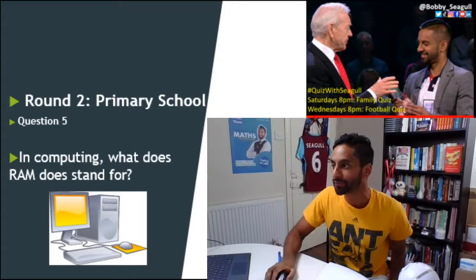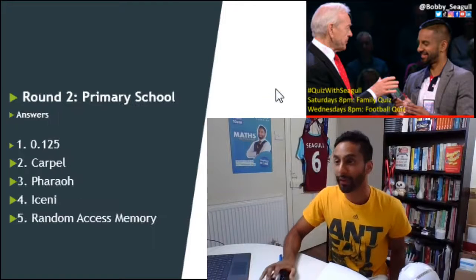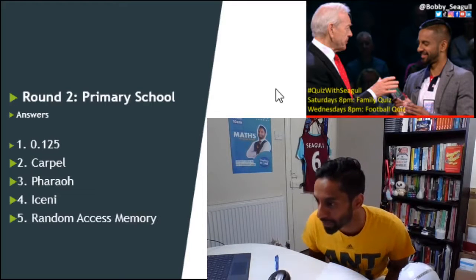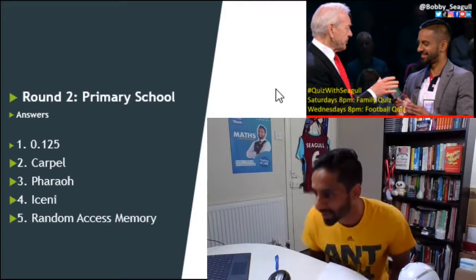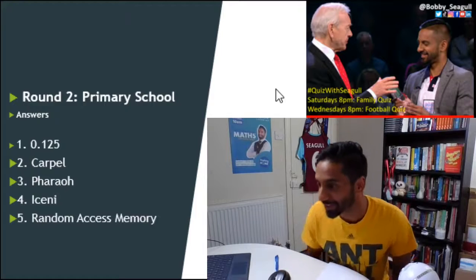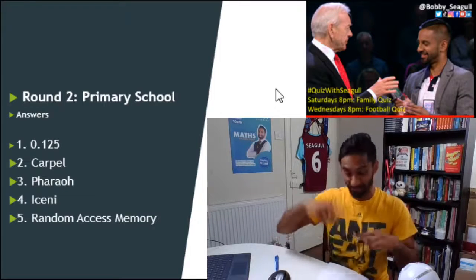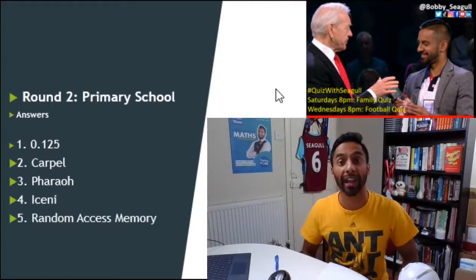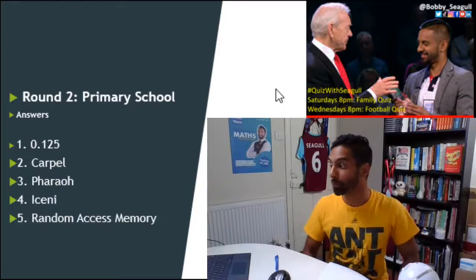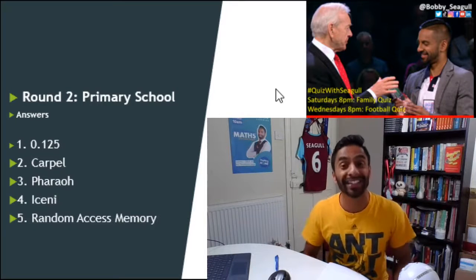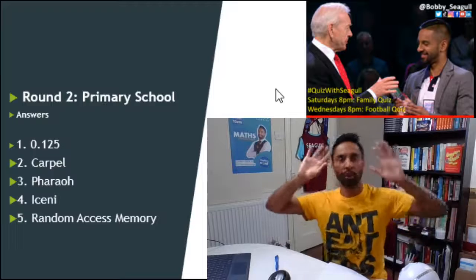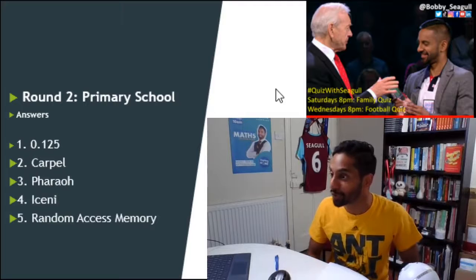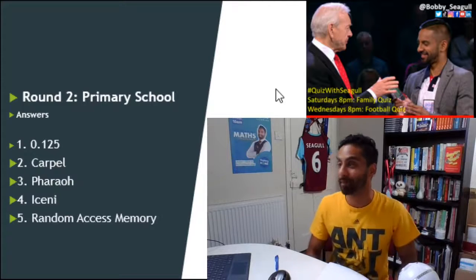Let's see the answers. Number 1 was 0.125. Number 2 is Carpel — that's the female part of the flower. Number 3: Pharaoh — P-H-A-R-A-O-H. Number 4: Boudicca led the Iceni tribe. Number 5: Random Access Memory. Who likes Daft Punk? Daft Punk was the clue for question number 5.